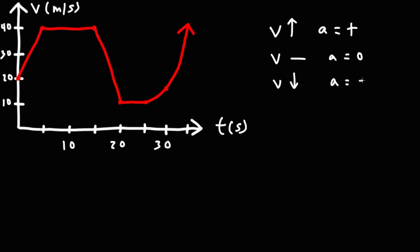With this information, we can determine the intervals when the acceleration is positive, when it's zero, and when it's negative. Here, the velocity is increasing, which means that the acceleration is going to be positive during this part of the graph. Here it's constant, so the acceleration is zero. Over here it's negative — the velocity is decreasing, so the acceleration is negative.